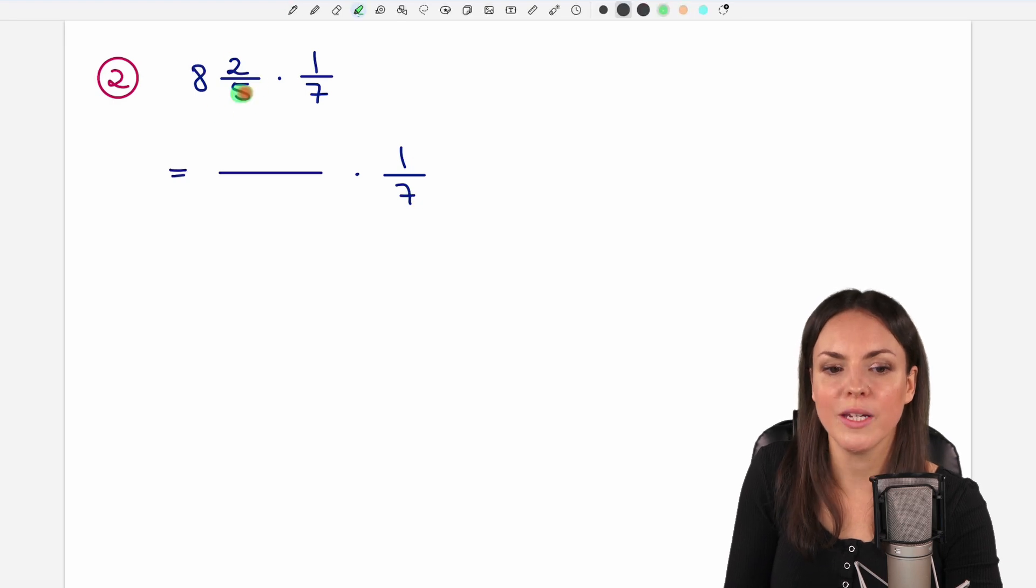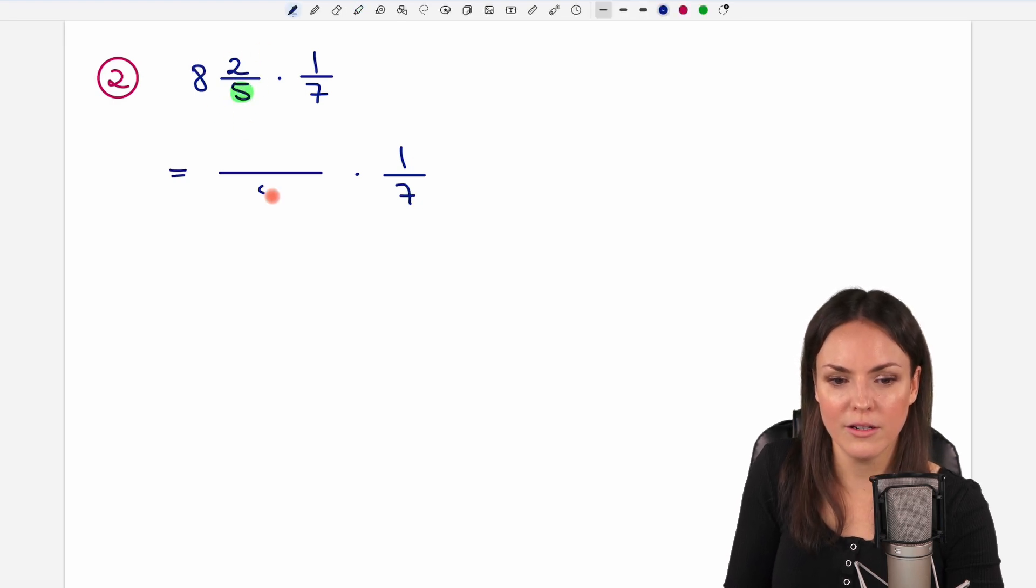But here, we keep the denominator, the 5, on the bottom. And for the numerator, we multiply these two numbers, 8 times 5, and add the number we haven't used yet, the 2. So, we have 8 times 5 equals 40 plus 2 equals 42, divided by 5, and we want to multiply this by 1 over 7.